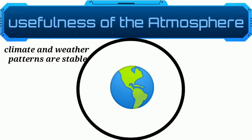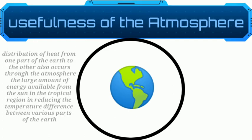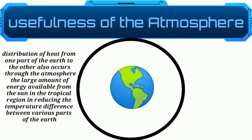Together with the oceans, the atmosphere shapes Earth's climate and weather patterns, making the Earth habitable by maintaining the right temperature on its surface. The distribution of heat from one part of the Earth to another also occurs through the atmosphere. The large amount of energy available from the sun in tropical regions is thus carried to colder regions, reducing temperature differences between various parts of the Earth.